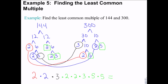In 144 I have a 2, a 2, and a 3 left. In 300 I have a 5 and a 5 left. Write down one from each matching pair and then everything left over — that gives you the least common multiple. You don't need the matching numbers twice; once accounts for one set from each number. So I have four 2s, two 3s, and two 5s, making the LCM of 144 and 300 equal to 3,600.